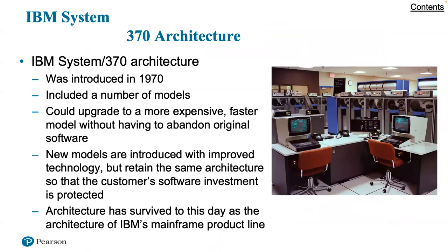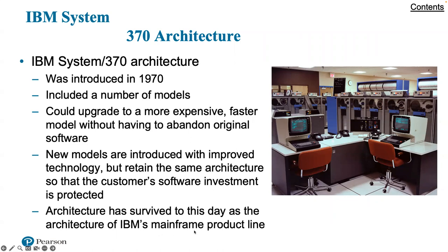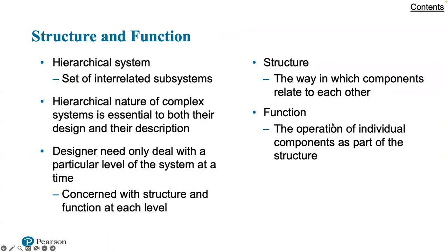One of the first computer systems was the IBM 360 and then the 370, introduced in the 1970s. It included a number of models — one could upgrade to a more expensive, faster model without having to abandon the original software. New models introduced improved technology but retained the same architecture so the customer's software investment was protected. The architecture has survived to this day as the architecture of IBM's mainframe product line. You had a relatively dumb terminal communicating with racks and racks of equipment.